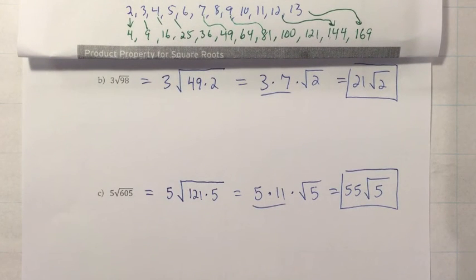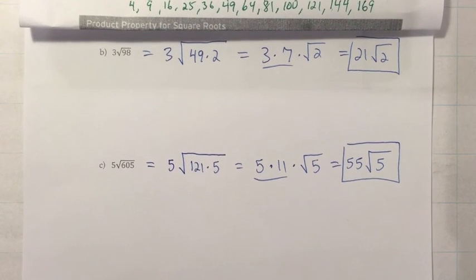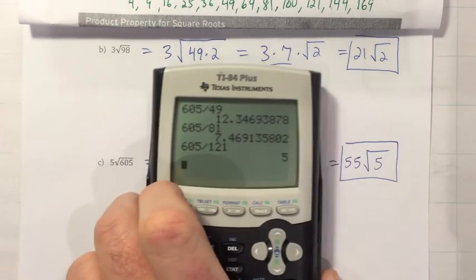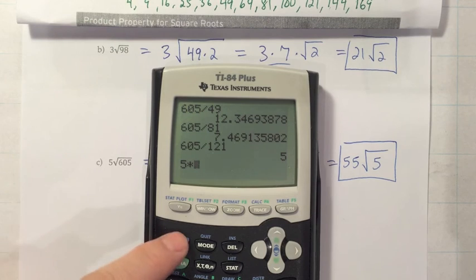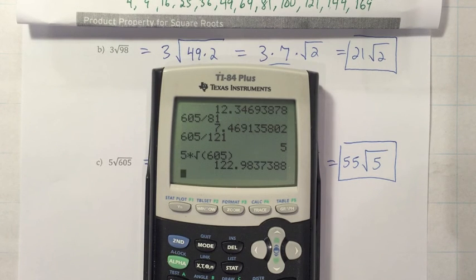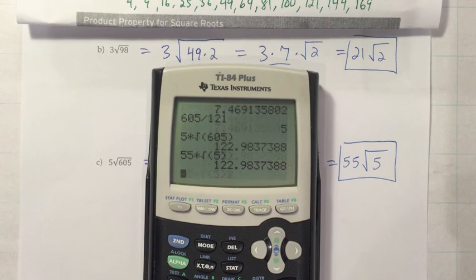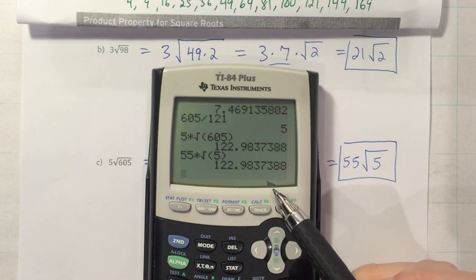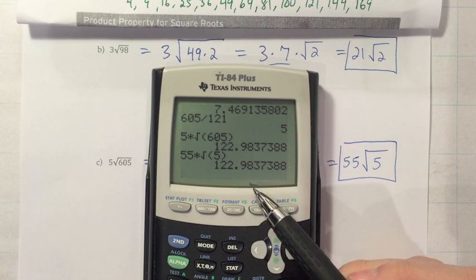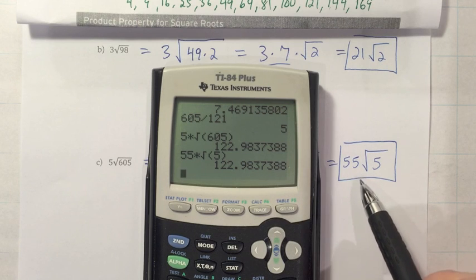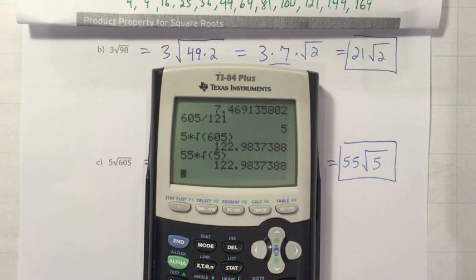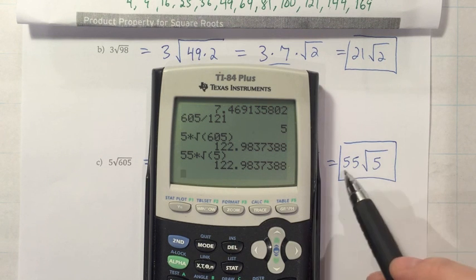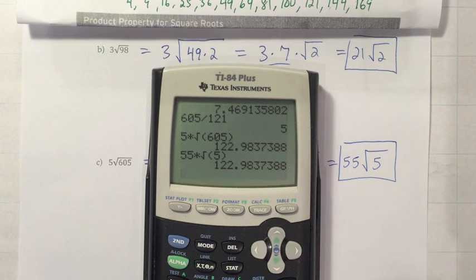I believe they ask you to check some of these on the calculator, so one thing you could do to check these is put in your initial answer and your end answer and see if they're the same. So let's try that. 5 times the square root of 605 is 122.9837388. And 55 times the square root of 5 is the exact same thing. So it does look like we've done that successfully. Now you don't want to go to a decimal as your actual answer unless they ask you to do an approximation on the calculator. That will come up at times. If they ask you to simplify, they just want you to get the biggest perfect squares out of there that you can and then write an answer with as much outside as possible and whatever's left inside you leave. All right, that's going to wrap up section 9.2.